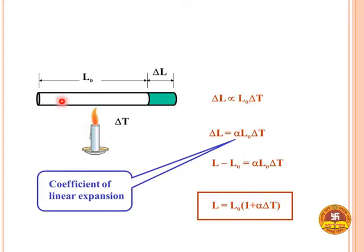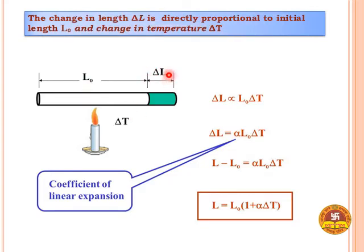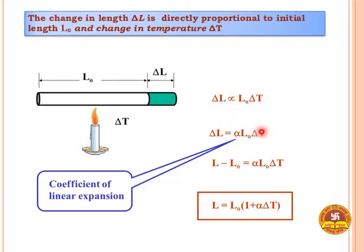Taking that rod of initial length L₀, on applying heat the length increases by ΔL and temperature rises by ΔT. This change in length ΔL is directly proportional to both the initial length L₀ and the rise in temperature ΔT. So ΔL is proportional to L₀ × ΔT. Introducing a constant alpha, we get ΔL = α × L₀ × ΔT. This alpha is known as the coefficient of linear expansion.